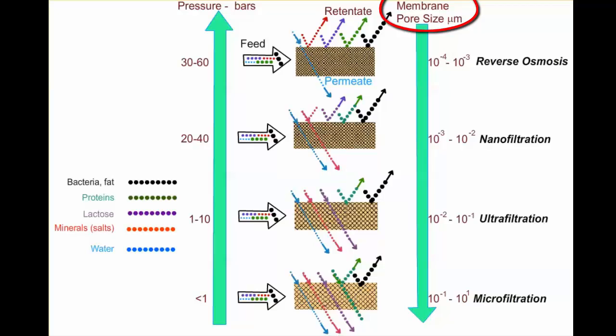The smallest pore size is for reverse osmosis membranes, ranging from 10^-4 to 10^-3 micrometers. For nanofiltration membranes, the pore size varies from 10^-3 to 10^-2 micrometers.